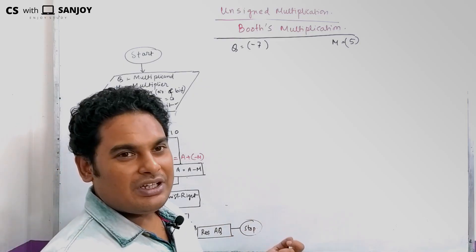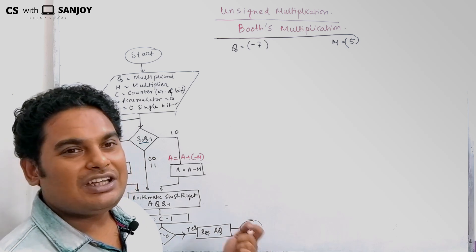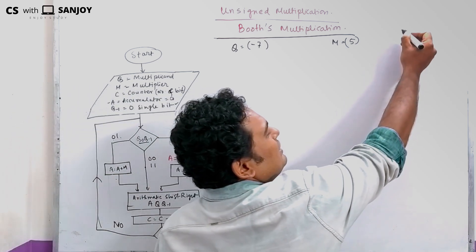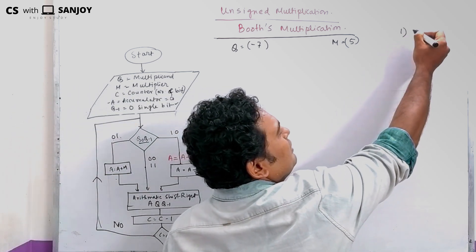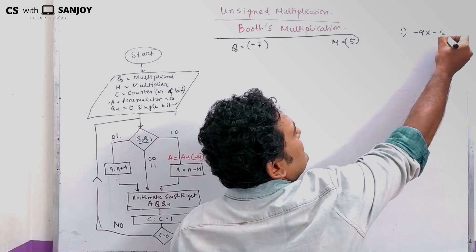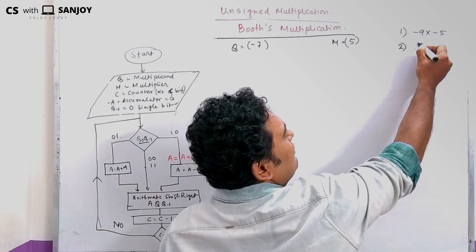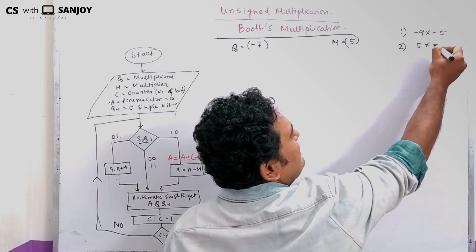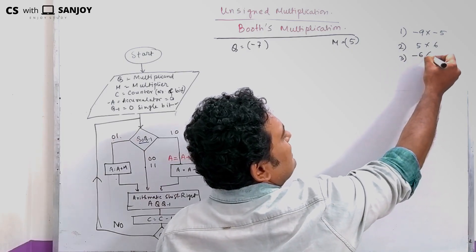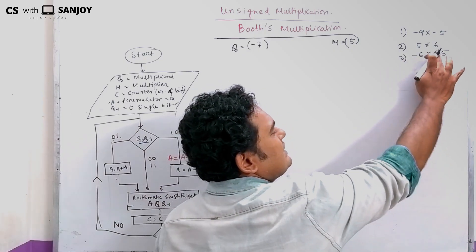Please let me know in the comment box. Share your result and your understanding. The assignment problems are: minus 9 into minus 5, 5 into 6, and minus 6 into minus 5, or minus 6 into 5.